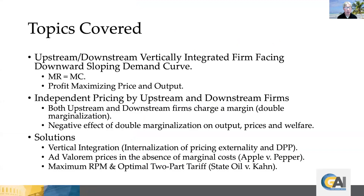Topics covered will first look at the optimal pricing of a vertically integrated upstream-downstream firm. We compare that to independent pricing by two separate upstream and downstream firms. We will see that both of these independent firms will charge a margin called double marginalization, and we will see the negative effect of double marginalization on output, prices, and welfare. We'll then go into potential solutions. One of course is vertical integration, which gives us internalization of the pricing externality and downward pricing pressure from the fact that the vertically integrated firm takes into account the effect of two margins on output profits.